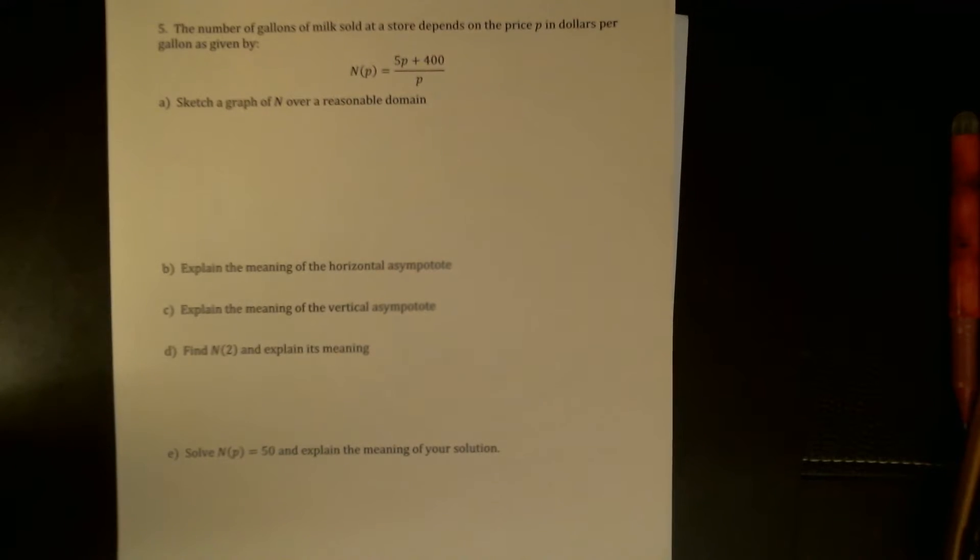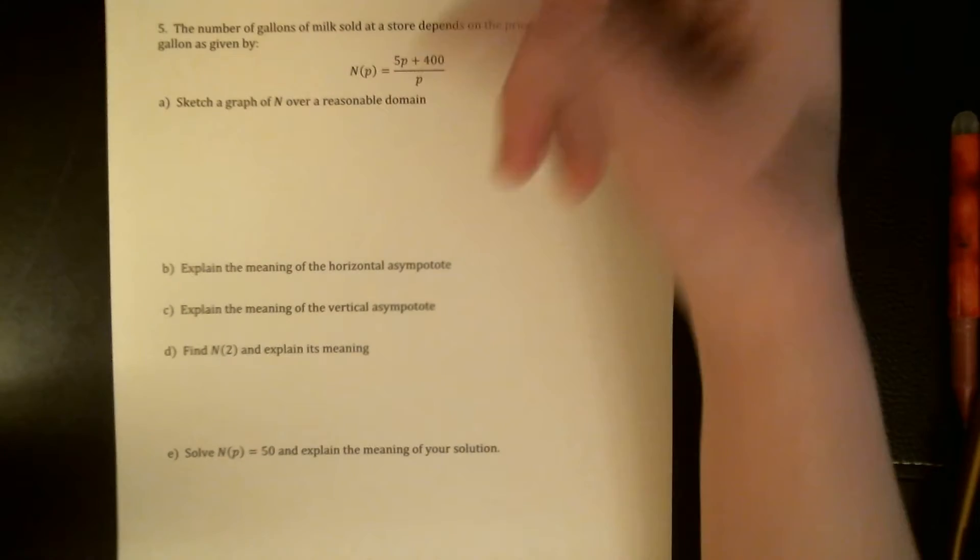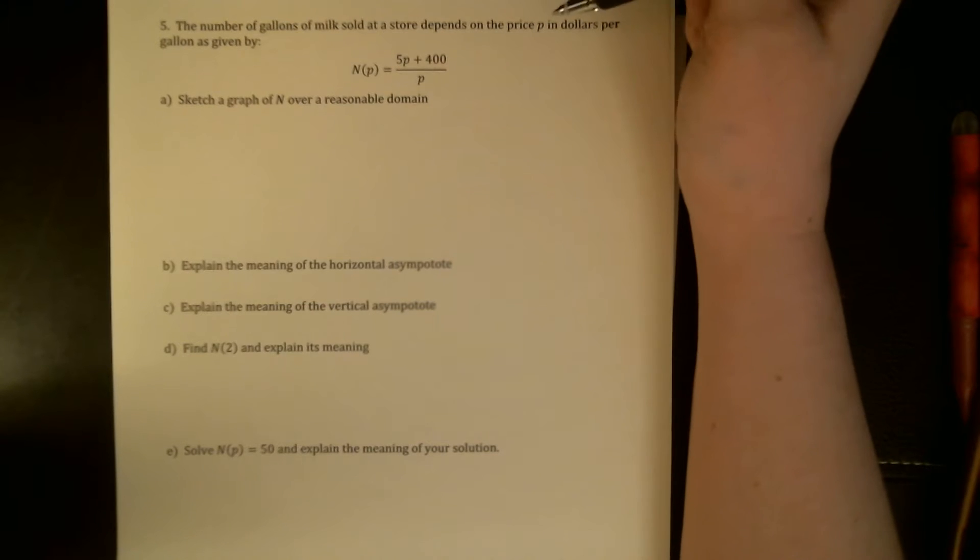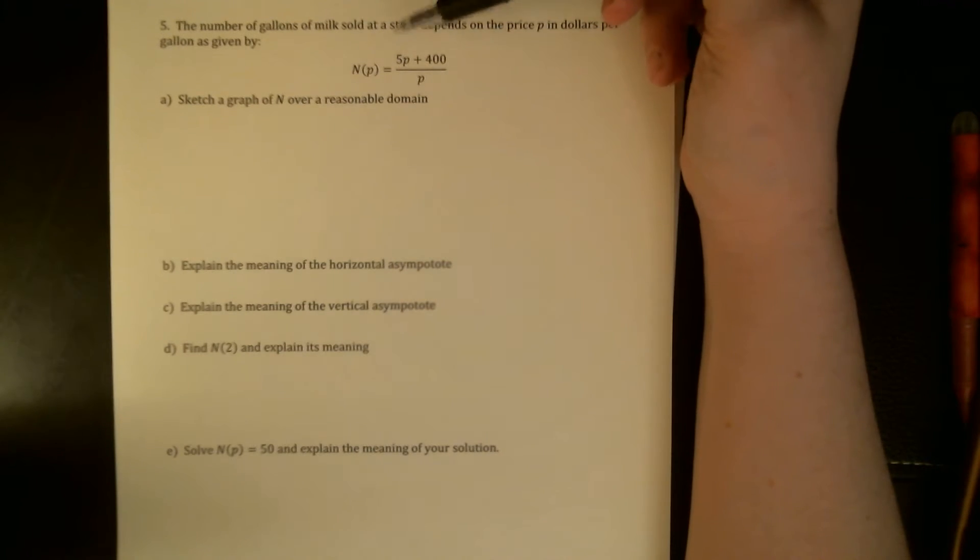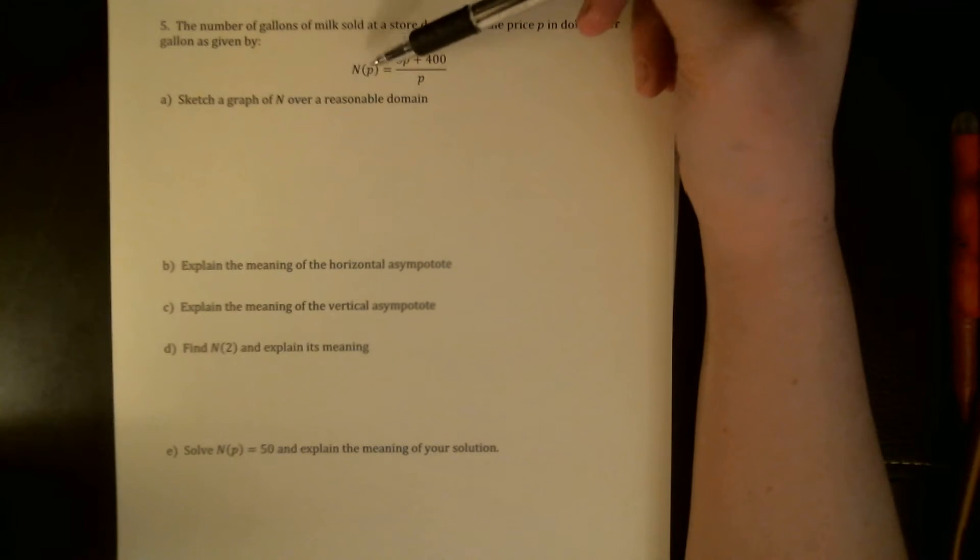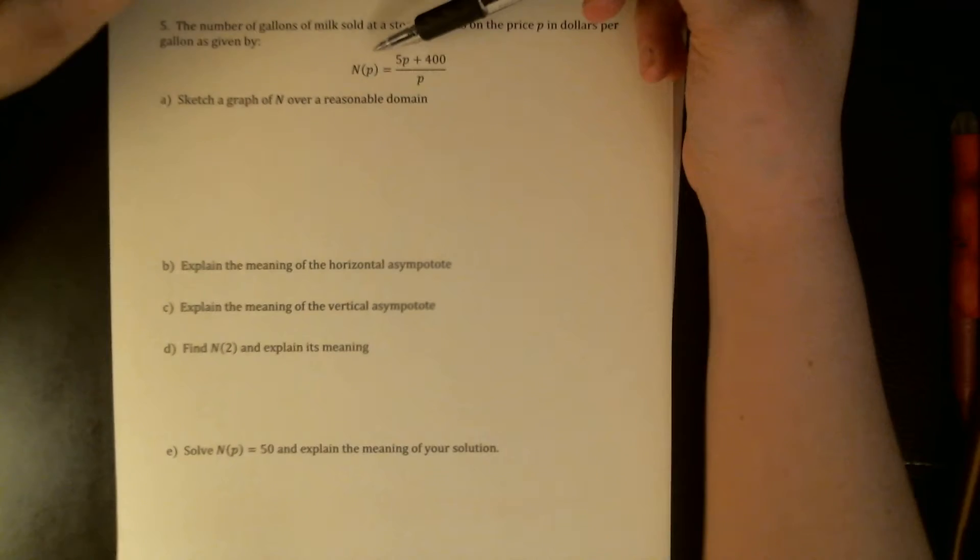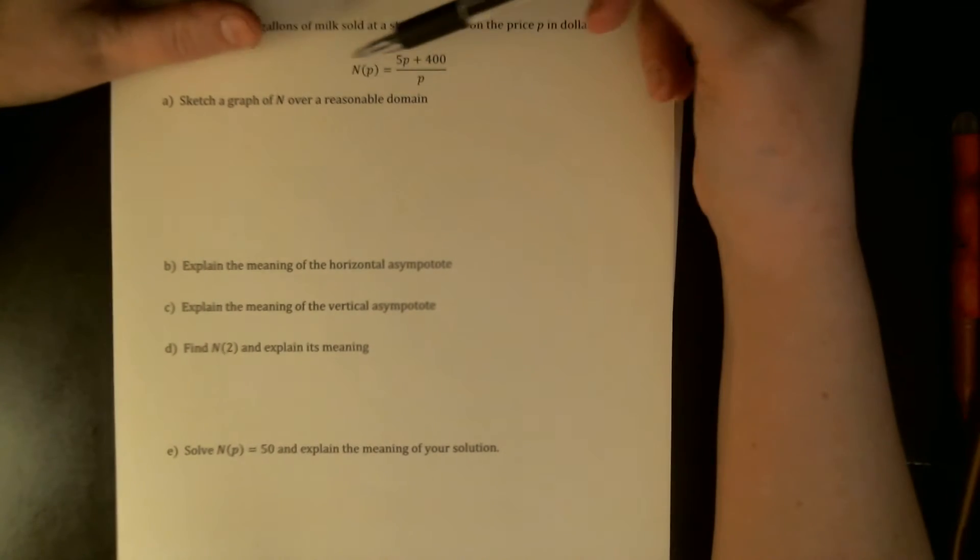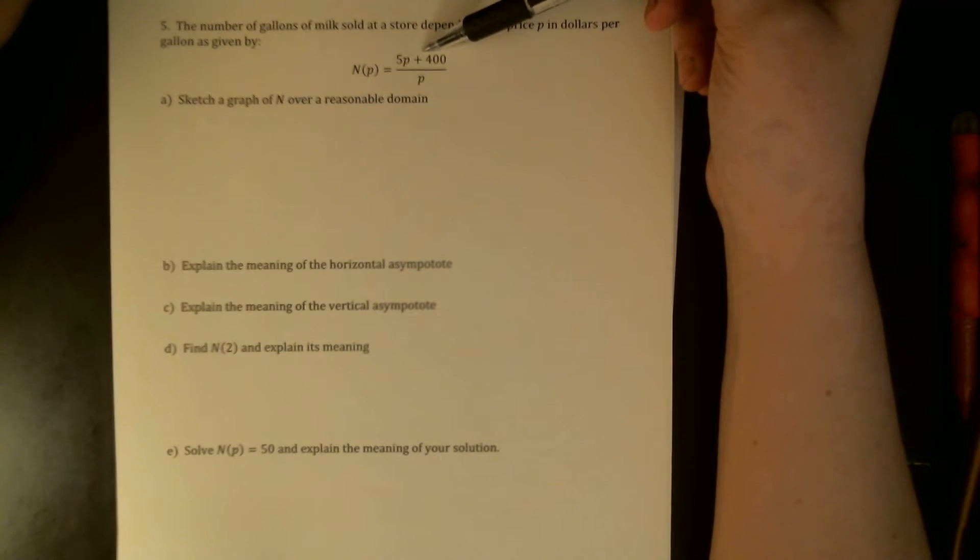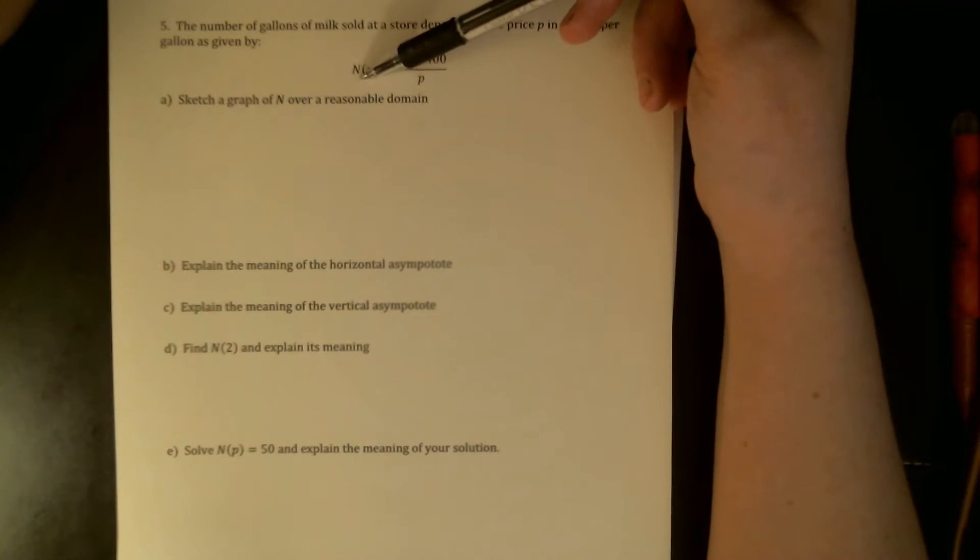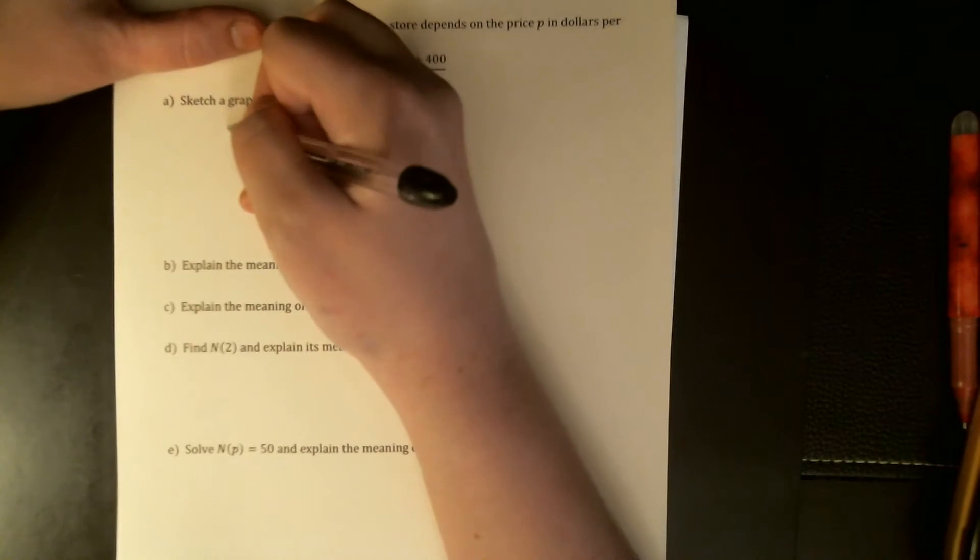The first thing is to try and sketch a graph of this function. This function is inputting the price in dollars that a store is charging per gallon of milk, and it's outputting the demand, basically the number of gallons that they'll sell at that price. Thinking about reasonable domain, price should not be negative. Number of gallons should not be negative. So I only want to see quadrant one.